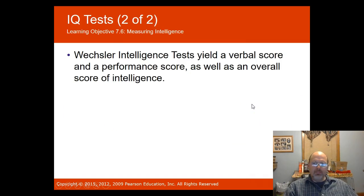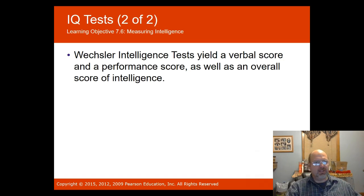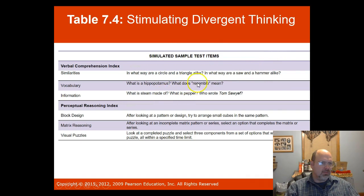Unlike the IQ test which is only used for children, David Wechsler devised a series of tests for different age groups: the WAIS for adult intelligence, the WISC for children, and the WPPSI for preschool-age students. An example from the WAIS would include questions like: in what ways are a circle and triangle alike? In what ways are a saw and hammer alike? These test verbal comprehension including similarities, vocabulary, and information.